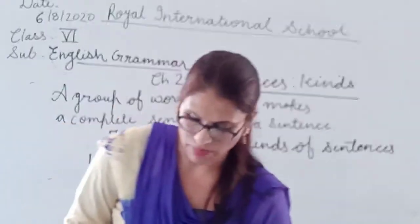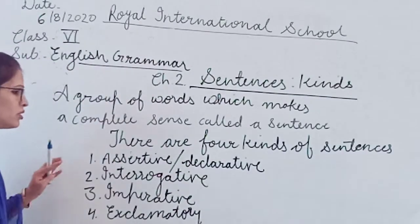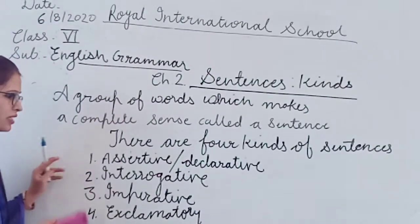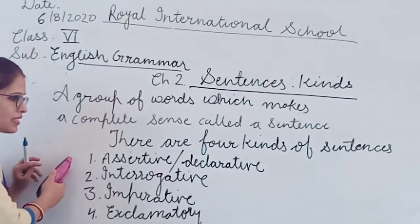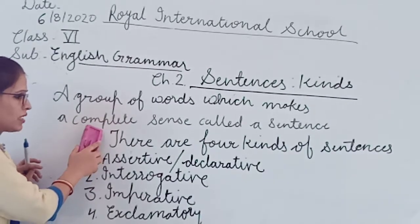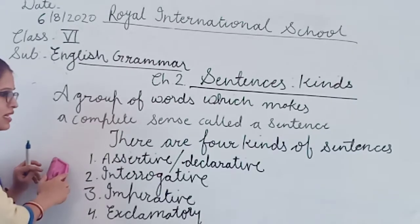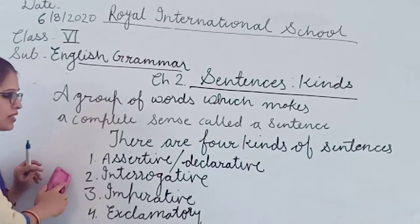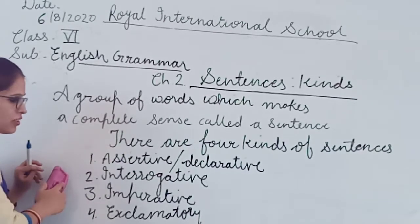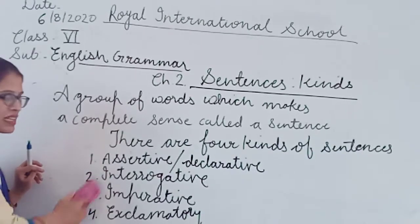Now I am going to explain the first type of sentence. So first, write in your notebook: there are four kinds of sentences - assertive (also called declarative), interrogative, imperative, and exclamatory.